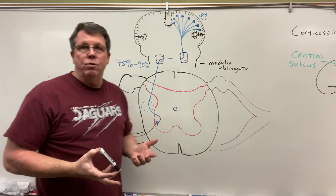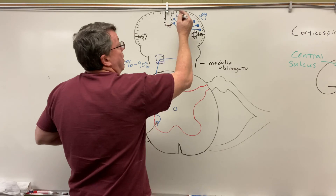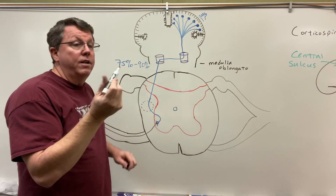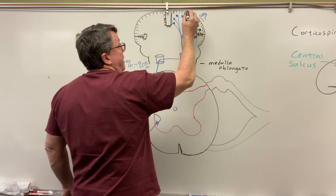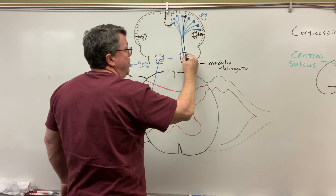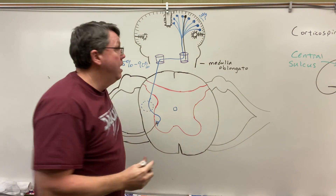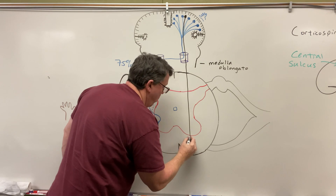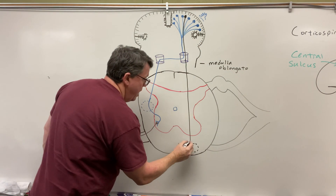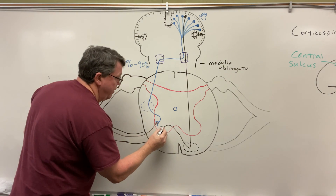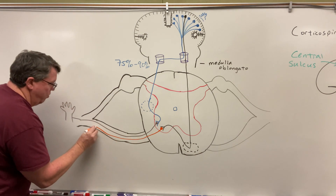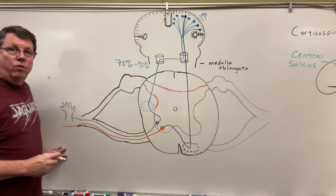Now let's say I want to do a sit-up. The part of the cortex that controls the trunk is going to be right up in here — I'll use a different color to distinguish this. This is my anterior corticospinal tract. It comes down, goes through the pyramids, but it does not cross over to the other side. It goes straight down the spinal cord to the anterior part here. Once it gets in there, it loops back around, crosses over to the other side, the nerve synapses, comes out through the ventral root, and goes to my trunk to help me do a sit-up.